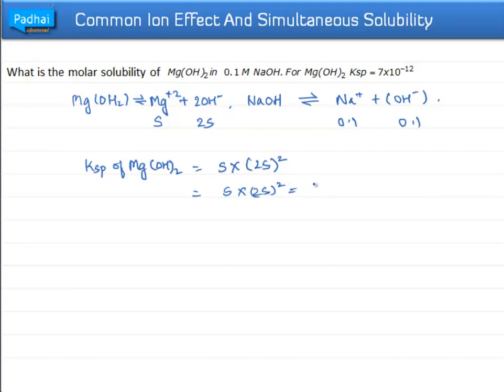S and 2S are the molar solubilities of Mg²⁺ and OH⁻. The Ksp of Mg(OH)2 was 7 × 10⁻¹², which is quite low.